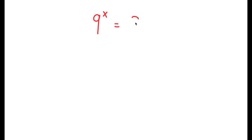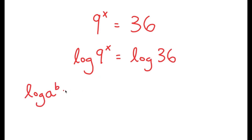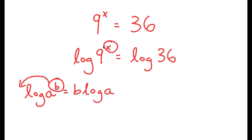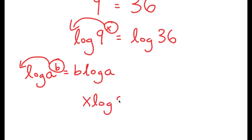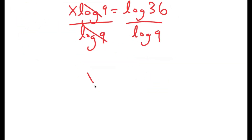In this problem, I'm going to solve the equation 9 to the power of x equals 36. To solve this equation, I take the log on both sides: log of 9 to the power of x equals log of 36. Using the property that log a to the power of b equals b times log a, I can move the exponent x to the front: x times log 9 equals log 36. Dividing both sides by log 9, I get x equals log 36 over log 9.